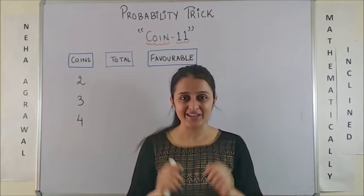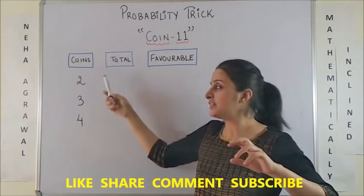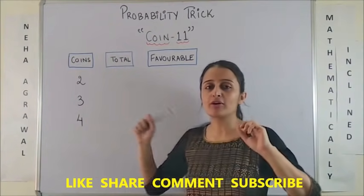Probability and the coin based questions are so important for competitive exams. Let's learn the magic trick, coins 11. It basically means we are going to learn about what happens when 2, 3 or 4 coins are tossed.